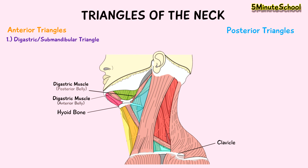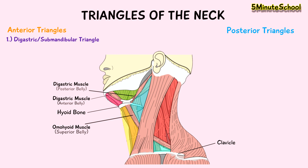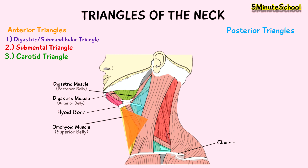Attached onto the hyoid bone is also the superior belly of the omohyoid muscle; the inferior belly can be seen here and is more in the posterior triangle of the neck. We're going to talk about the superior belly first because it relates to the anterior triangle. Now that I've pointed out this muscle, you might be able to see more triangles formed. Here is the submental triangle, here is another triangle called the carotid triangle, and then another triangle here called the muscular triangle. So within the anterior triangle of the neck we can see another four triangles.